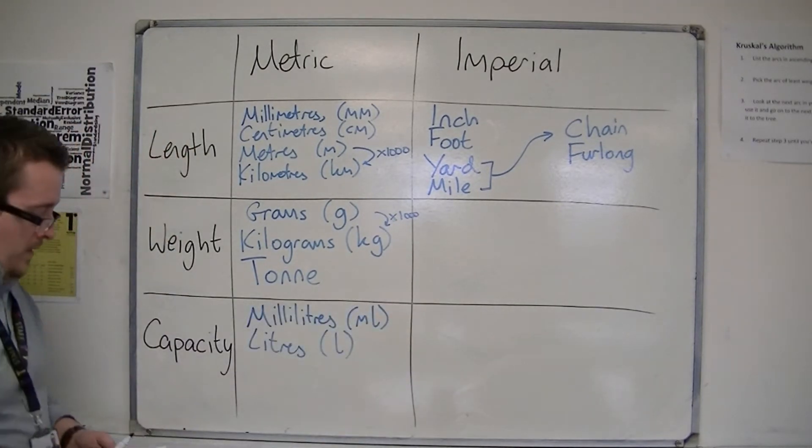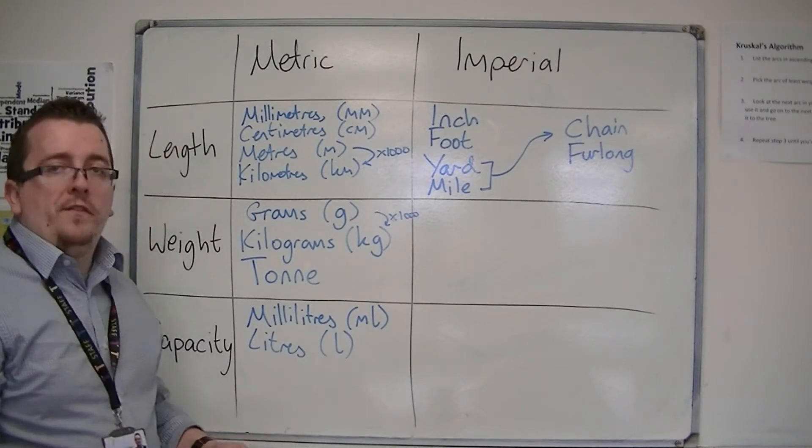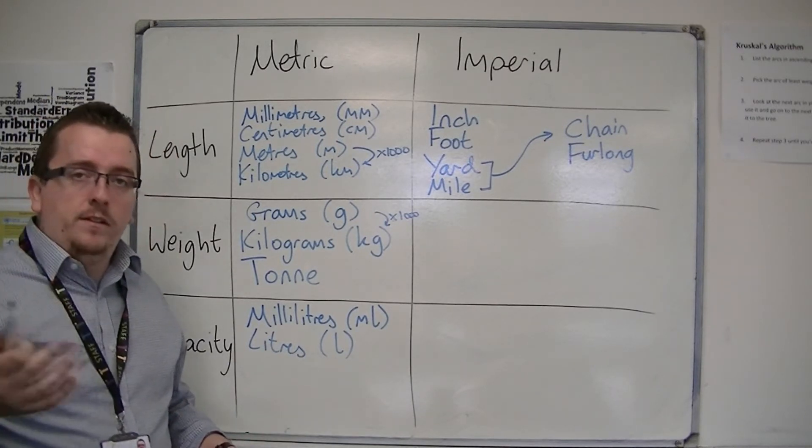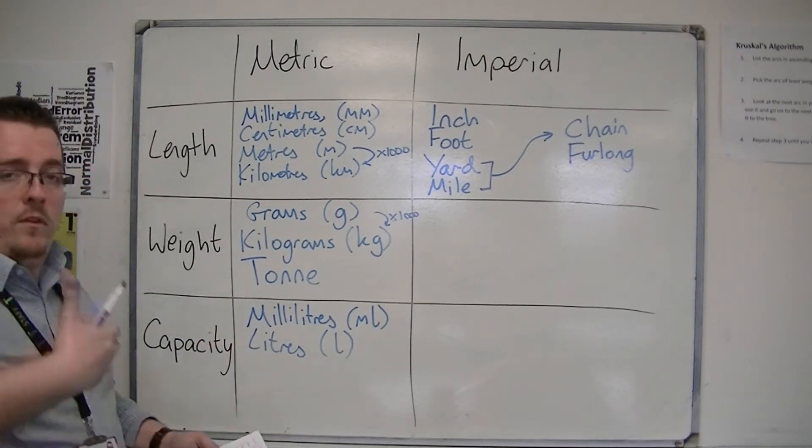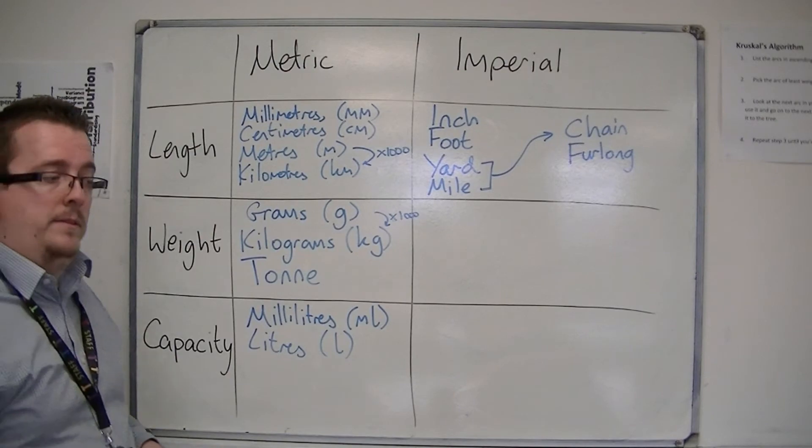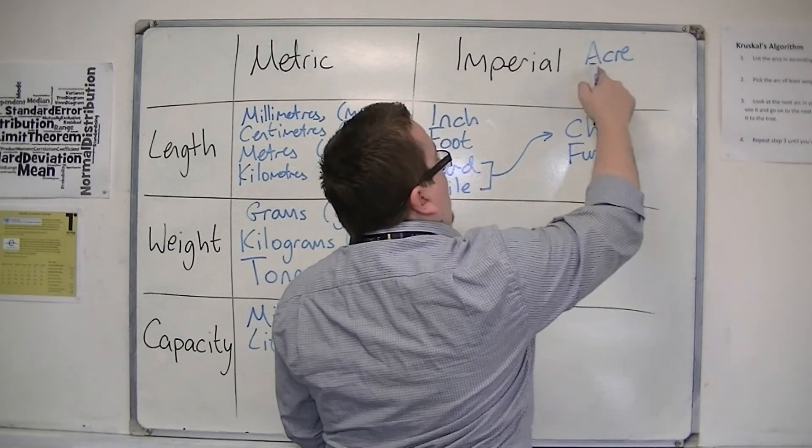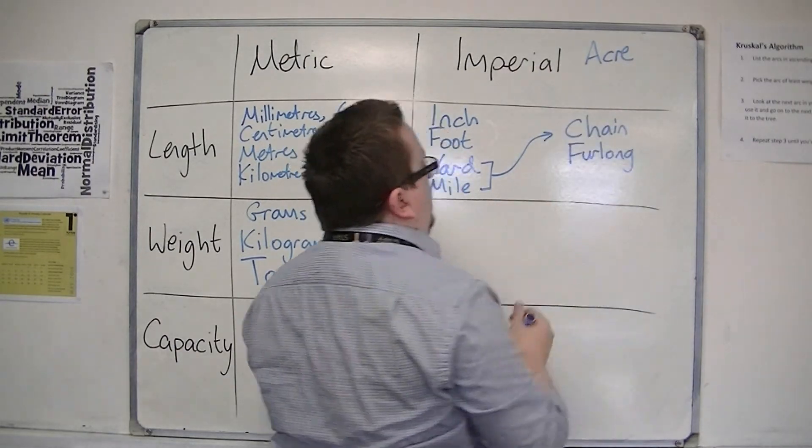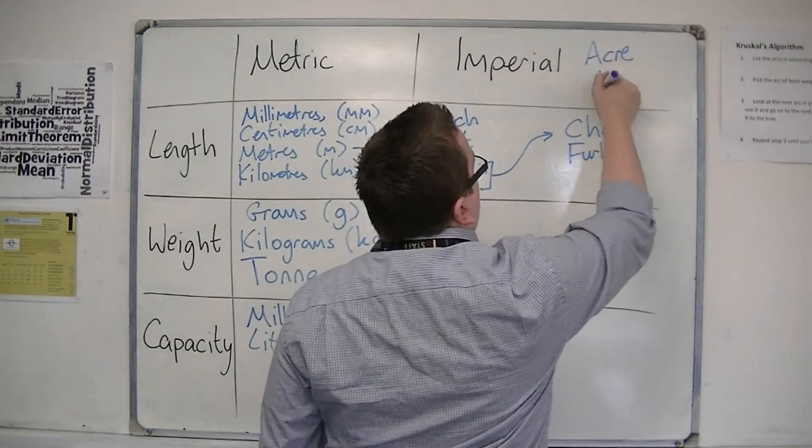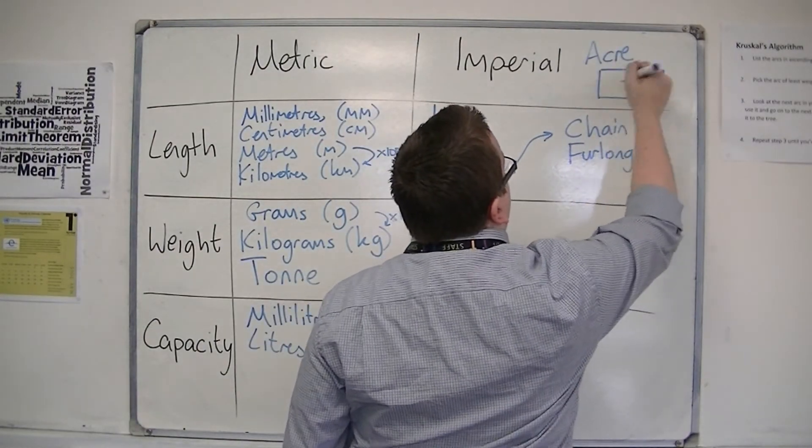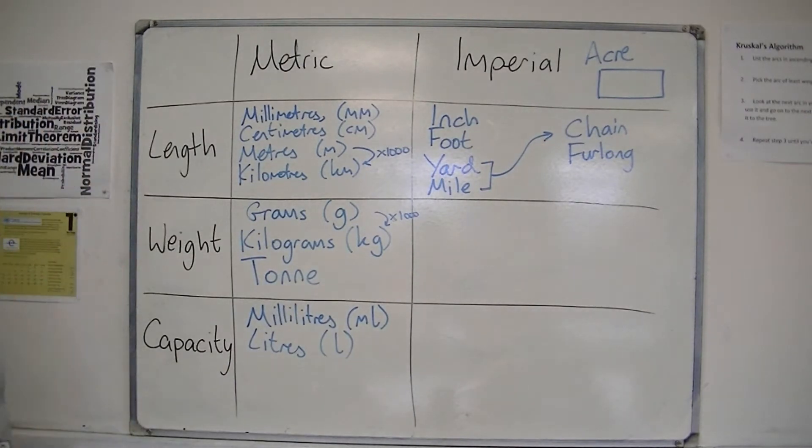For weight, just to note that you might have heard of something like an acre. You've probably heard of an acre. That's an imperial measurement of area. And an acre is one furlong by one chain. So one chain by a furlong, and that's what is determined as an acre.